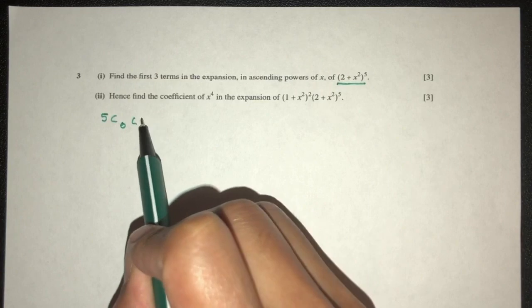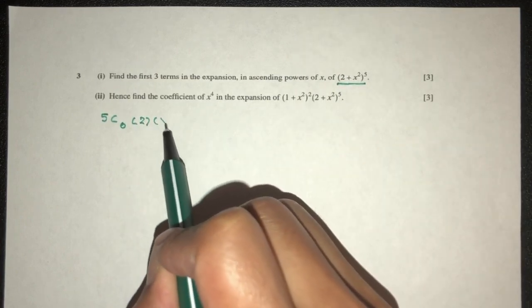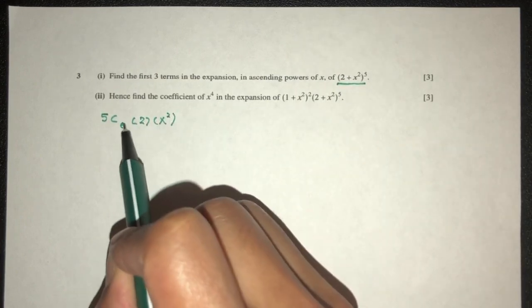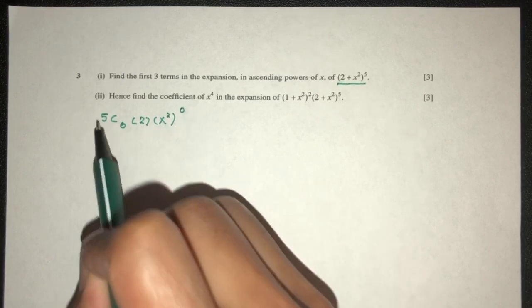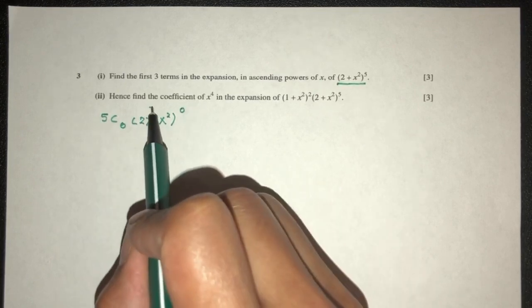Here we have 2, and here we have plus x squared. Because here we have 0, this will be 0 as well. 5 minus 0 is 5, that will be 5.